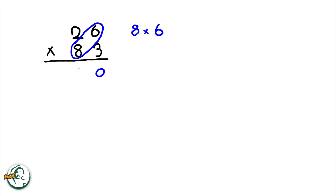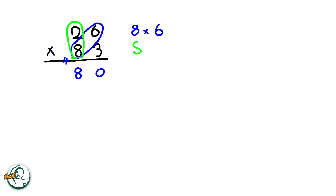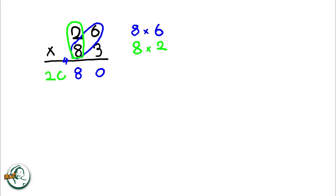So, we multiply 8 by 6, giving us 48. We write down the 8 and carry over the 4. Next, we multiply 8 by 2, resulting in 16. Adding the carried over 4 to 16, we get 20.